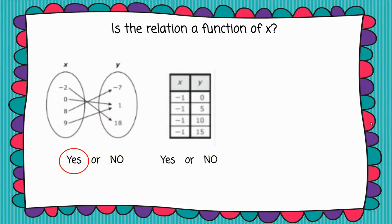This one is a table, and in this one I want to look at the x column. Do the x values repeat? Oh my goodness, yes they do. We have negative ones all over the place. So because the x value of negative one repeats, this is not a function. All right, two more to go.